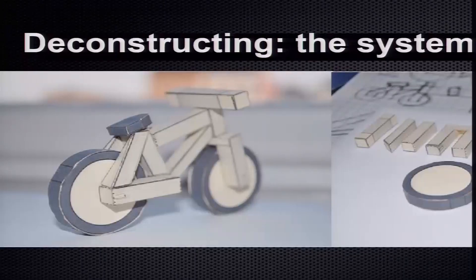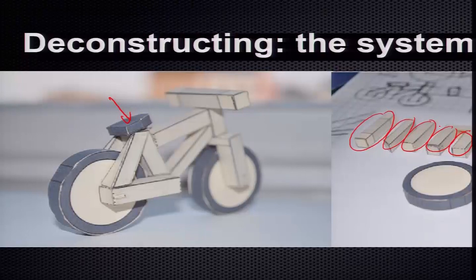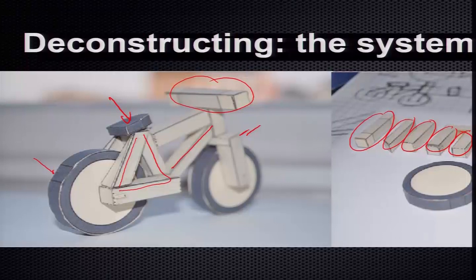Typically any prototyping activity would start with a deconstruction of the system, particularly mapping functions and the various parts related to a product. For example, looking at a bike, you should be able to identify a frame composed of different parts: a handle, a support member, wheels, and a seat. You have to deconstruct the whole system into small subsystems whenever you think about prototyping something.